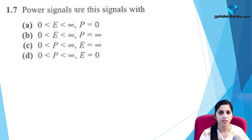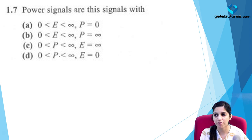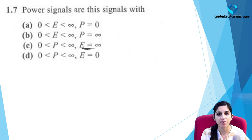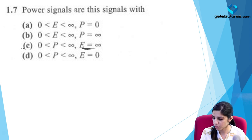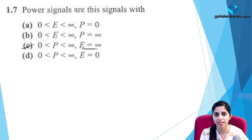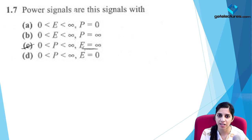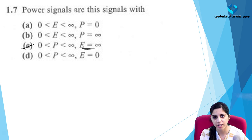For power signals, power is calculated only when energy is infinite. Power must be finite for a signal to be called a power signal, so the correct option is option C: finite power and infinite energy. A signal is neither power nor energy signal when it has infinite energy and infinite power, or zero power and zero energy.